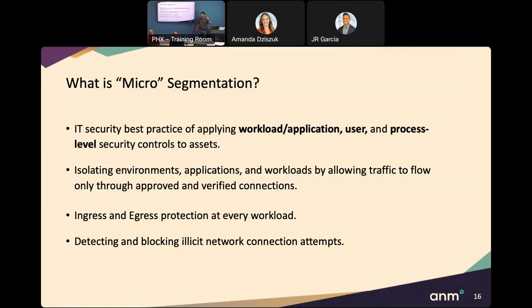So what is micro-segmentation? It's a best practice where we tie workload and application to user — policy where user maps to application and process. We want to isolate those environments so there's implicit zero trust; you have to have explicitly allowed policies. Everything should be protected at ingress and egress at every point. We shouldn't rely on a big edge firewall or centralized point — we should bring policy as close to the user and workload as possible. And all this should be detecting and providing visibility; you can't wait for a help desk call or until every printer starts printing a ransom note.